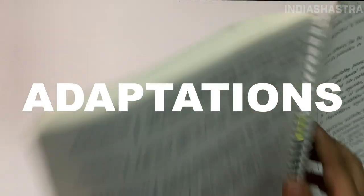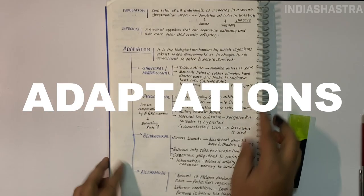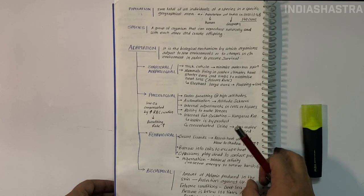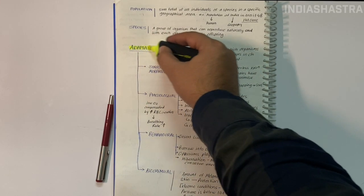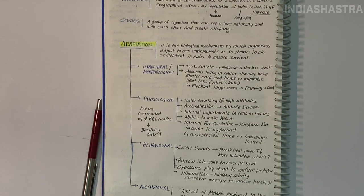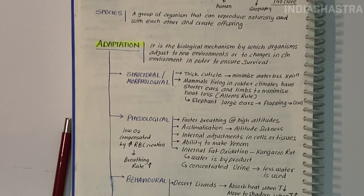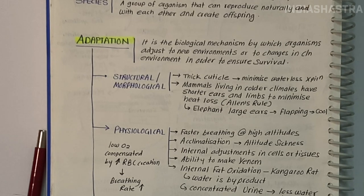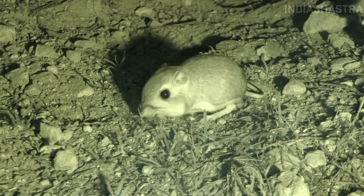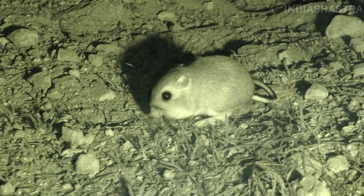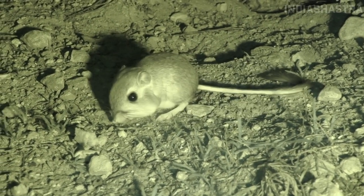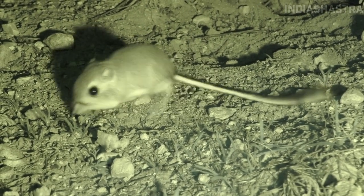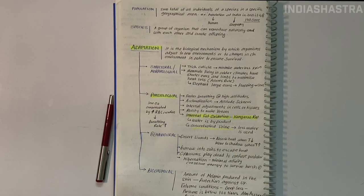Adaptations: You adjust when visiting relatives or when guests come. You stay silent until you get acclimatized. Adaptation is the biological mechanism by which organisms adjust to new environments or change in environment to ensure survival. For example, in absence of water, a kangaroo rat in North American desert meets water requirements through internal fat oxidation producing water as by-product.